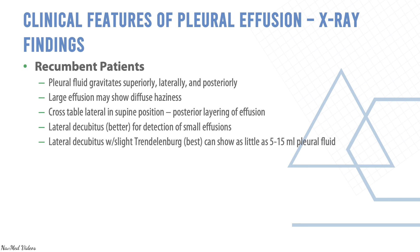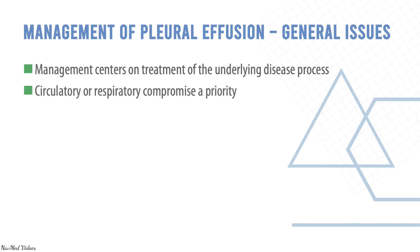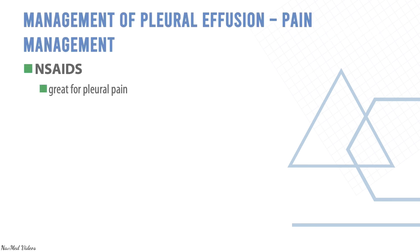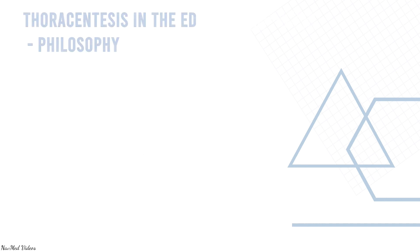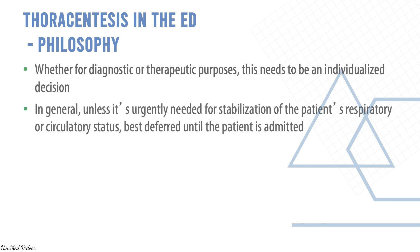Management centers on treatment of the underlying disease. Circulatory or respiratory compromise is a priority — treat serious conditions without delay. NSAIDs are used for pleural pain; opioids are safe and effective but should be used cautiously in the elderly. Thoracentesis in the ED can be diagnostic or therapeutic; this is an individual decision. In general, unless urgently needed for stabilization of respiratory or circulatory status, it is best deferred until the patient is admitted.